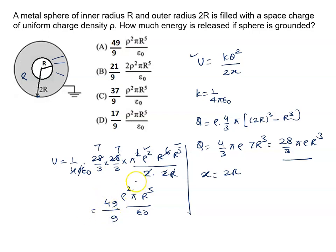So we will see, the right answer of this problem is known as 49 rho square pi r to the power 5 upon 9 epsilon not. Option A is the correct answer of this problem.